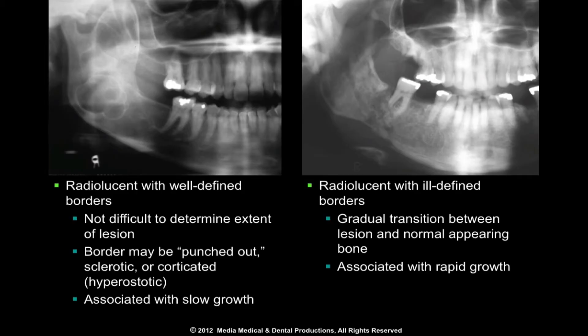Borders may be described radiographically as either well-defined or ill-defined. A well-defined border is one in which most, but not all, the border is distinct. The border may appear either punched out, sclerotic, or hyperostatic.